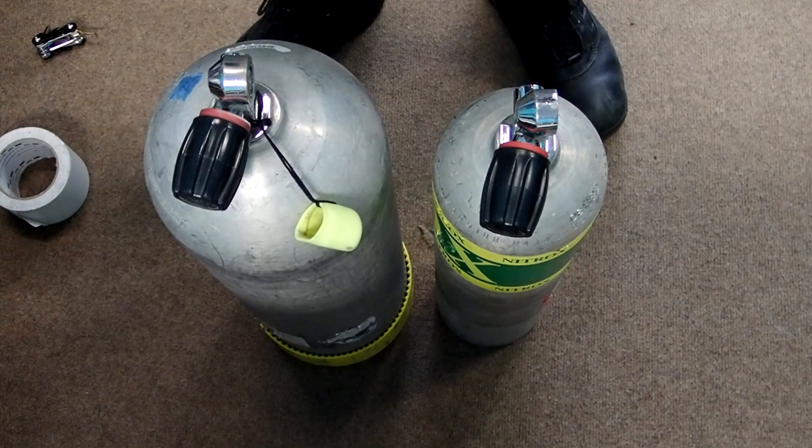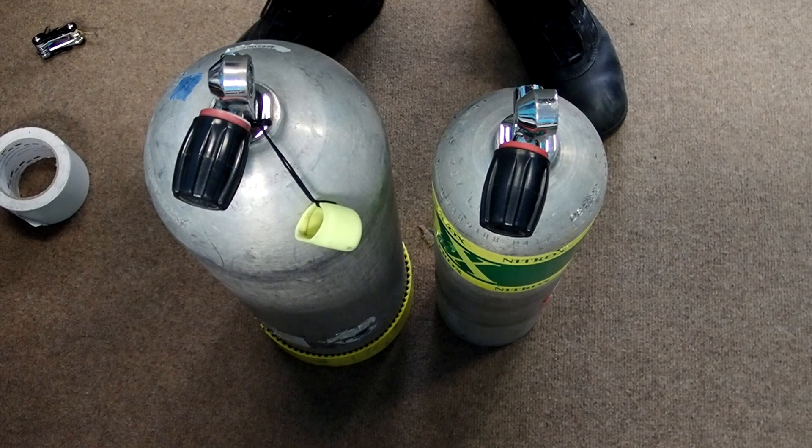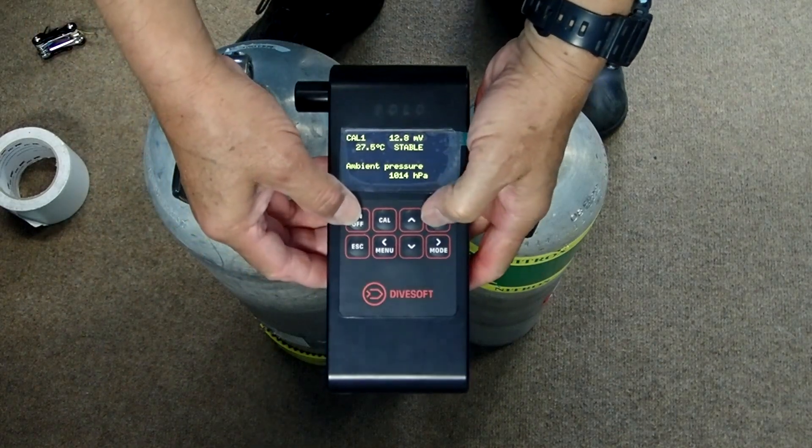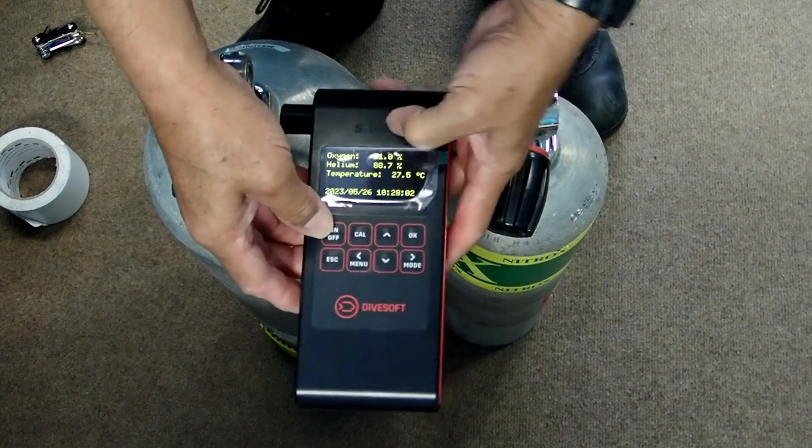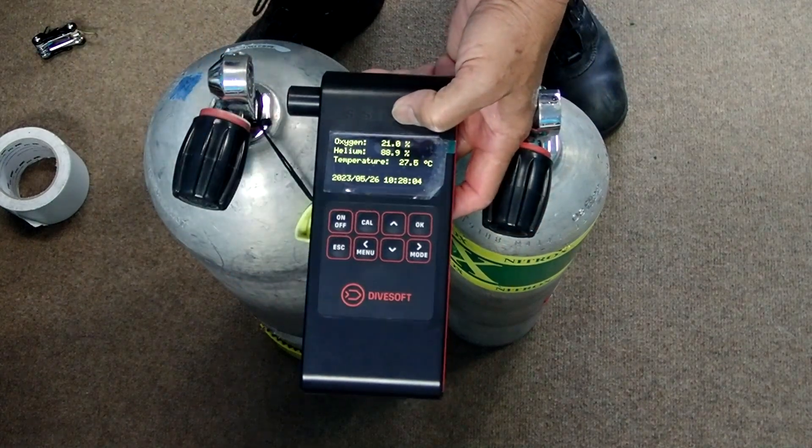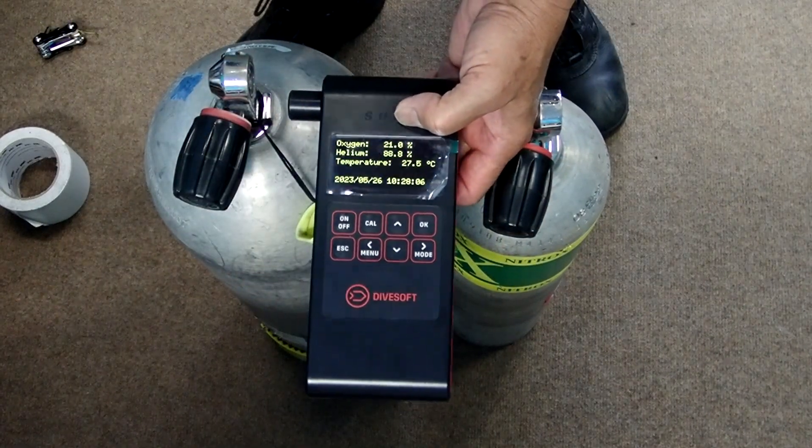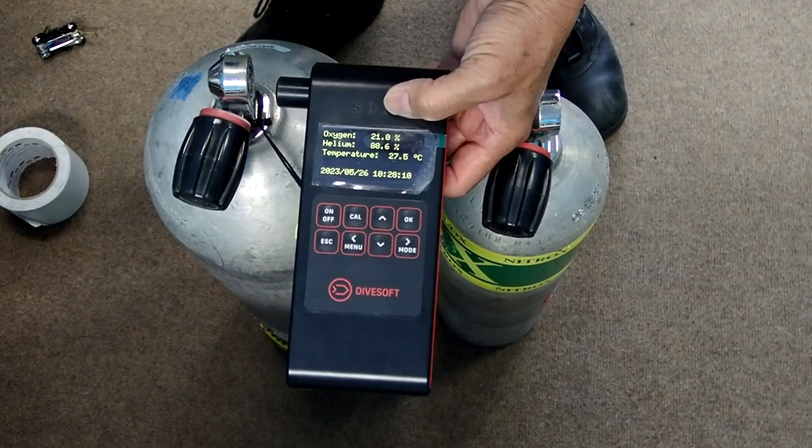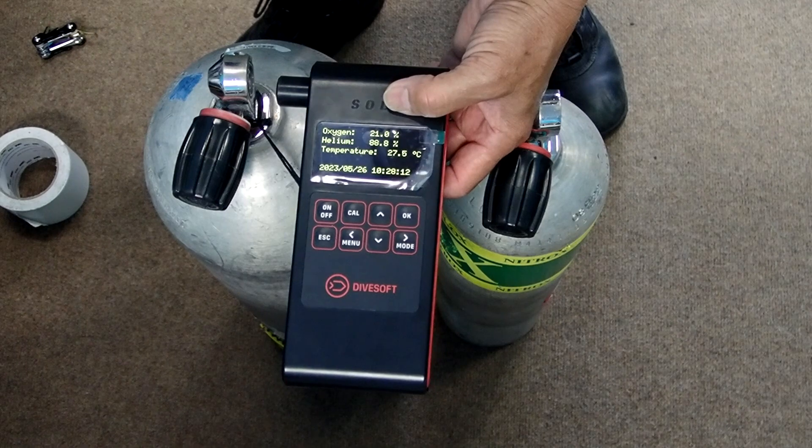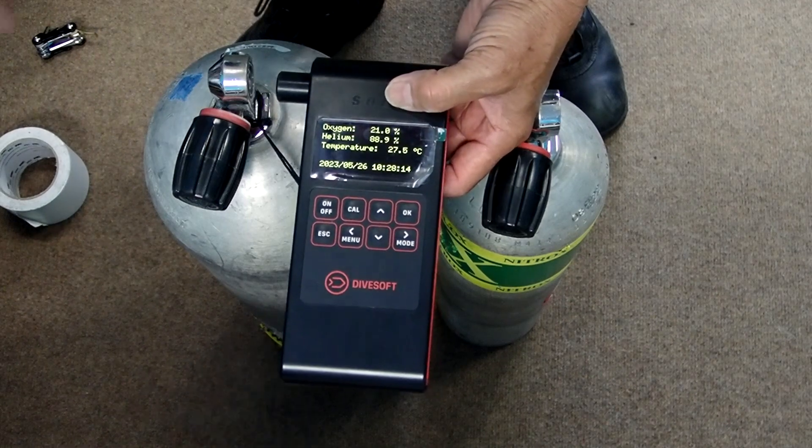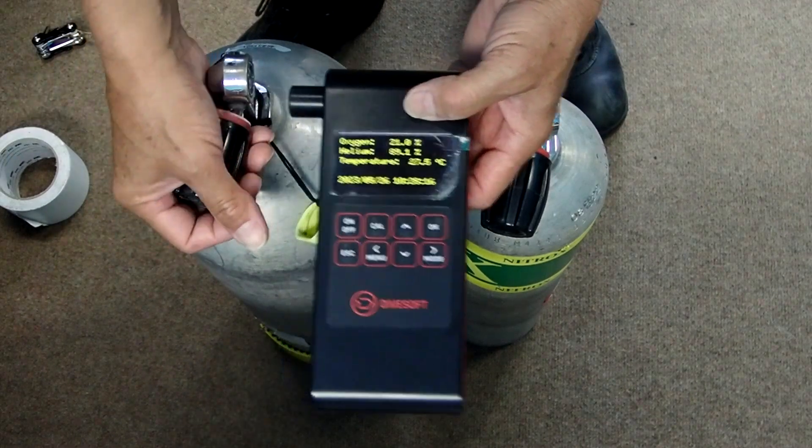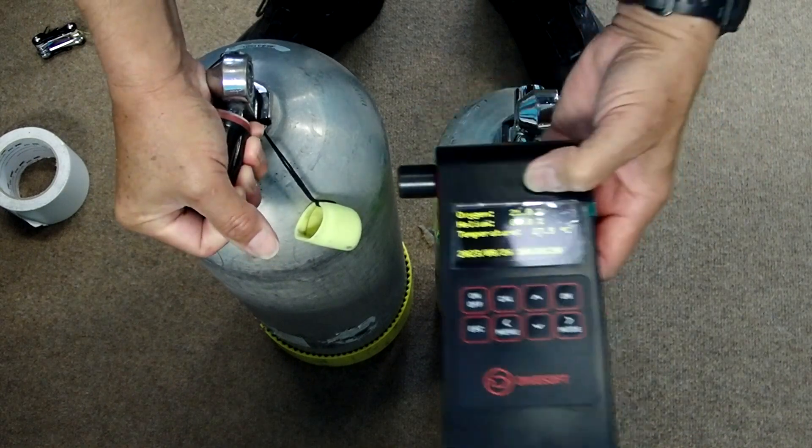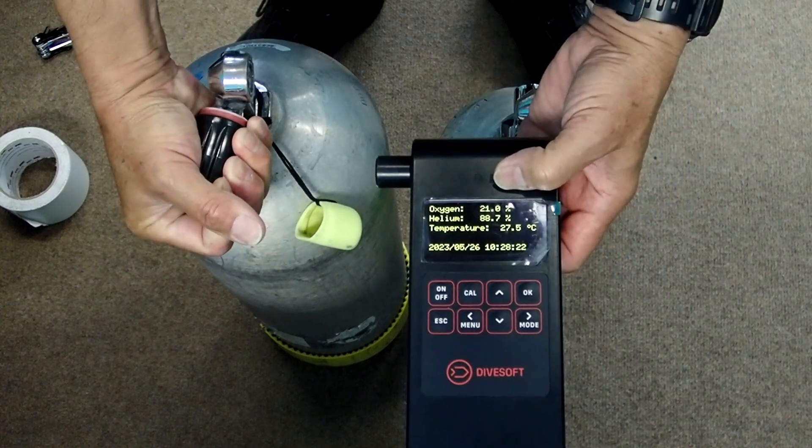We're now going to go through the process of calibrating and analyzing the tank using the Divesoft analyzer. This is to illustrate that different analyzers have different calibration processes and the importance of calibrating your analyzer. We're going to do the same thing as before, establish a flow rate off the tank.